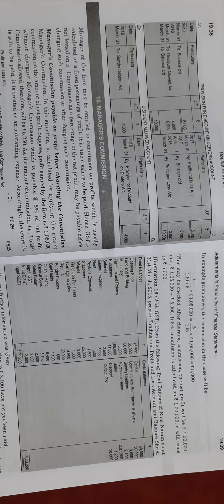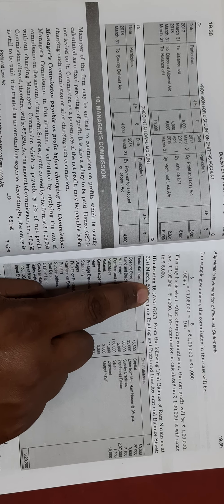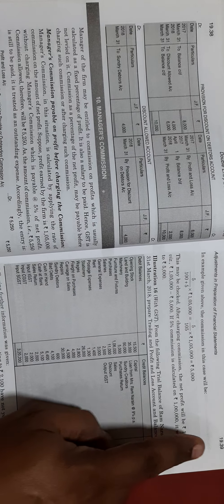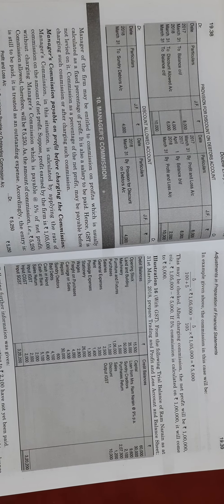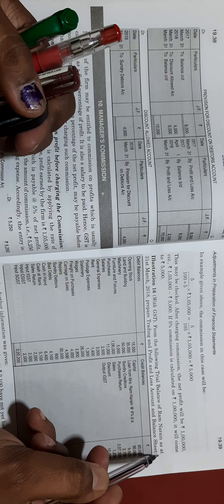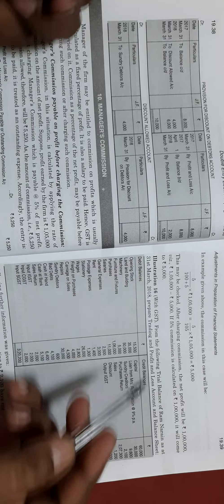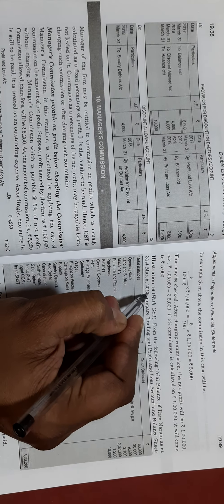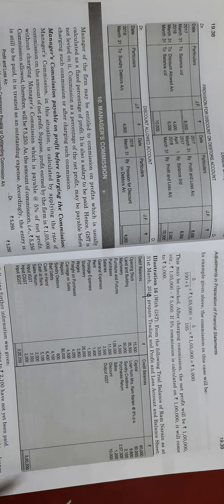This session covers adjustments with final accounts — problem number 16, page number 19.39. From the following trial balance of Ram Narain as at 31st March 2019, we will prepare the trading, profit and loss account and balance sheet.